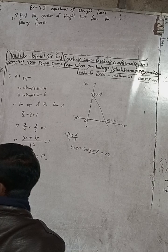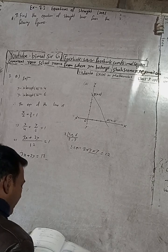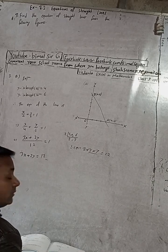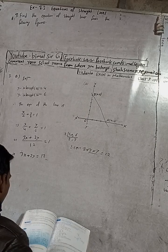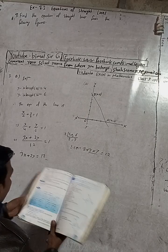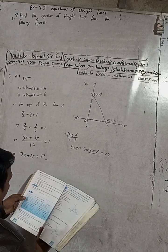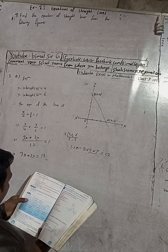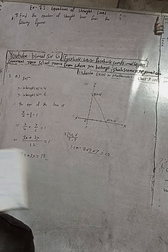The answer in the book for 3a is 3x + 2y = 12. Correct answer.